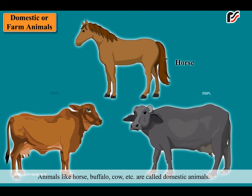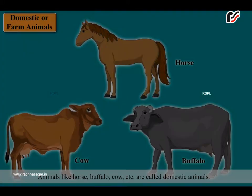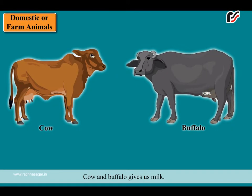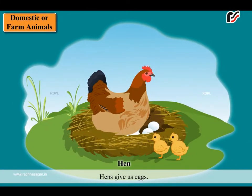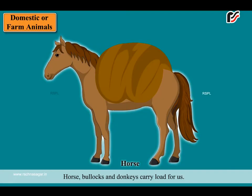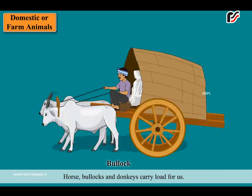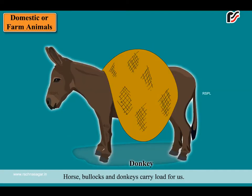Animals like horse, buffalo, cow, etc. are called domestic animals. Cow and buffalo give us milk. Hens give us eggs. Horse, bullocks and donkeys carry load for us.